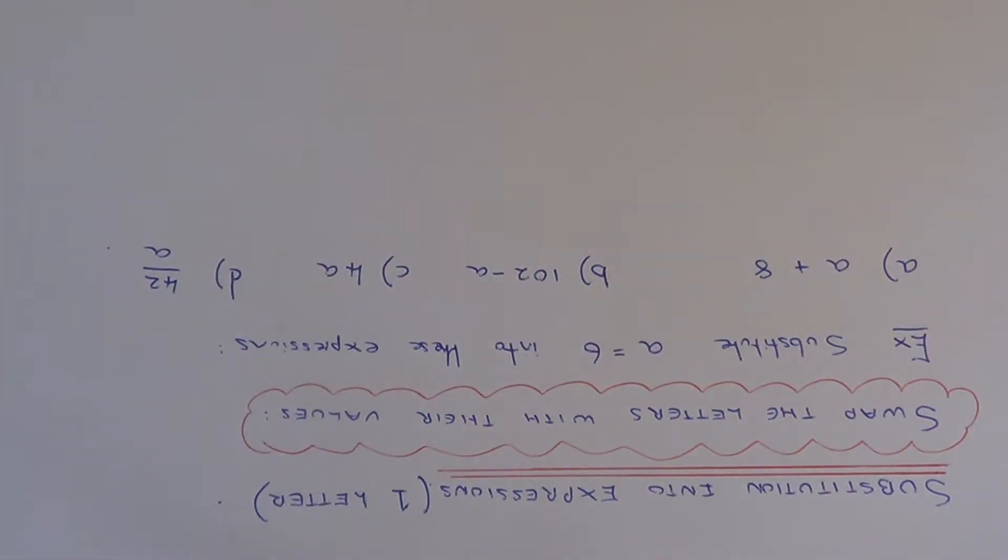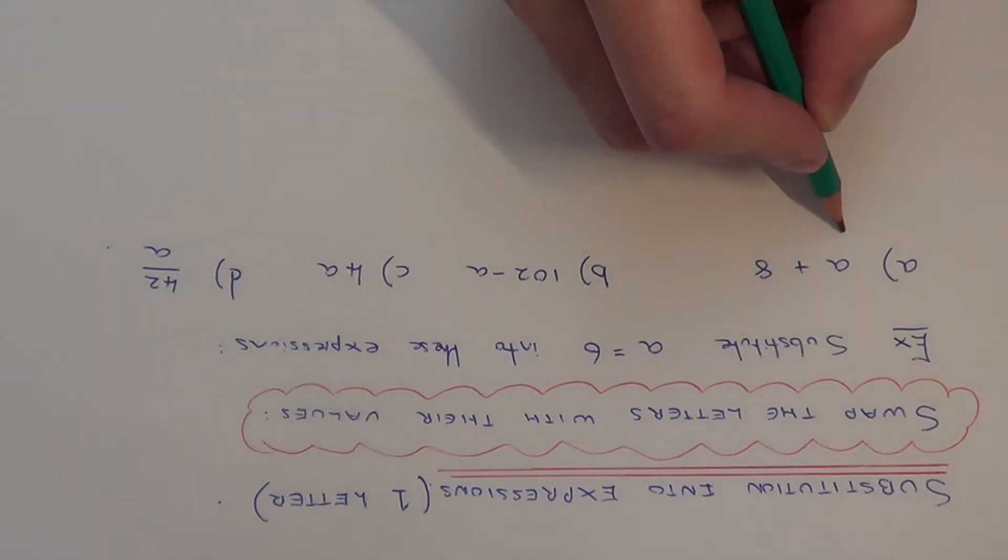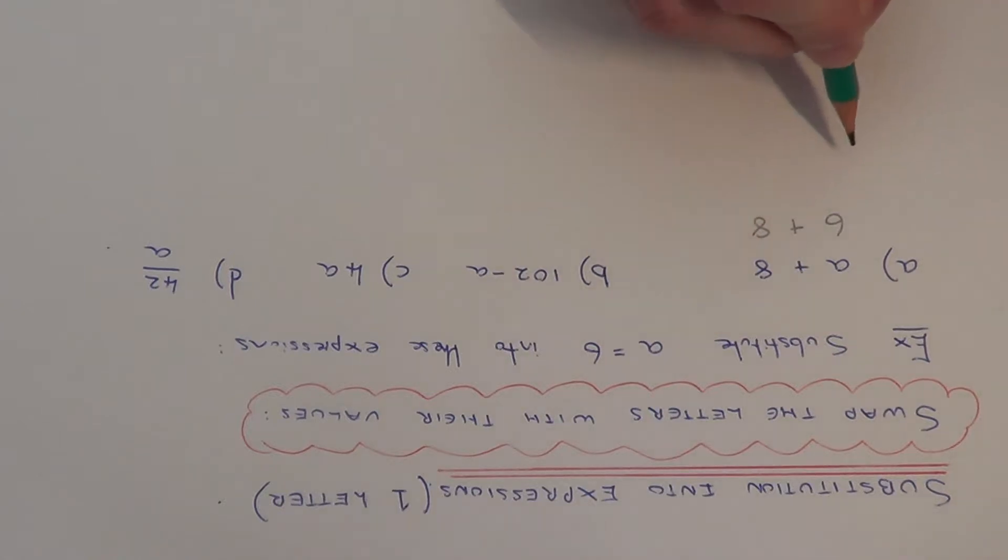Let's look at the example here. We've got to substitute a equals 6 into these expressions. Our first expression is a plus 8. We know that a is equal to 6, so if we change the a to 6, that would be 6 plus 8, and 6 plus 8 equals 14.